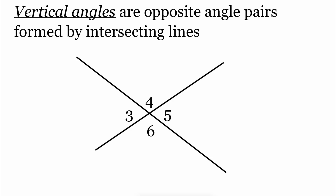Our last angle pair are vertical angles. Vertical angles happen when we have an X shape formed by two lines, and they are the opposite pairs of angles. Looking at the picture, angles 3 and 5 are across from each other, and angles 4 and 6 are also vertical angles because they are across from each other. That's it for this video — thanks for watching.